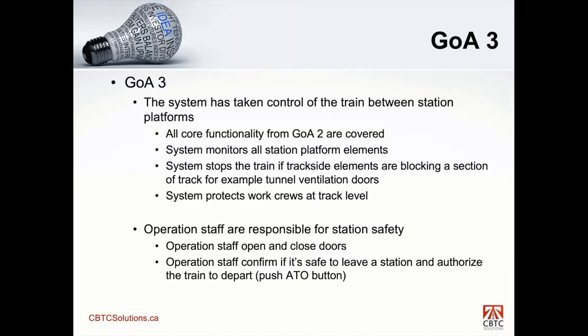In GOA 3, the system has taken control of the train in between station platforms. In GOA 2 we had introduced the core functionality required for automation, but now what GOA 3 is doing is removing the driver from the equation in between stations. When the train is traveling from one station to the next, the GOA 3 system is in full control. It's monitoring the station platform elements and will stop the train if trackside elements are blocking a section of track — for example, tunnel vent doors. If the tunnel vent doors are closed, that is input into the system.